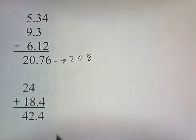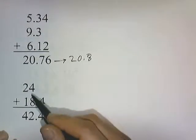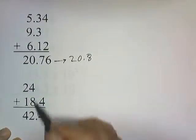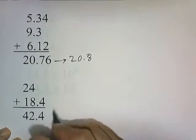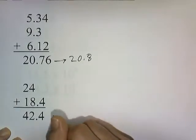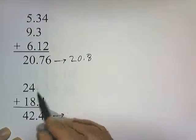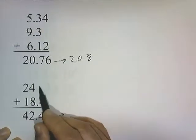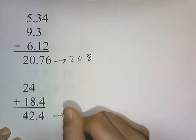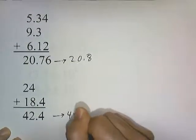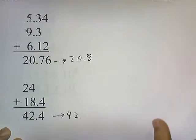Similar to our coin example: 24 plus 18.4 gives a raw answer of 42.4. The number 18.4 has one decimal place, but 24 has no decimal places. So our final answer can have no decimal places, and we write 42.